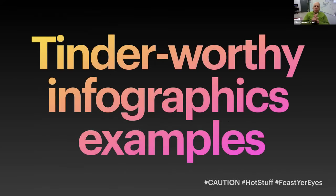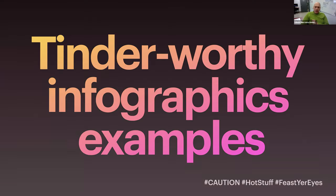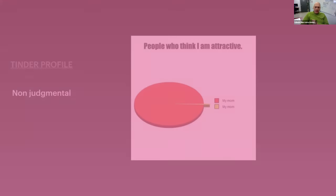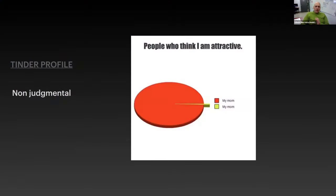So there are some Tinder-worthy infographic examples right there — hashtag caution, hashtag hot stuff, hashtag feast your eyes. There's my Tinder profile. People who think I'm attractive: my mom and my mom.